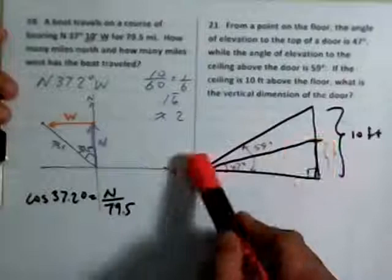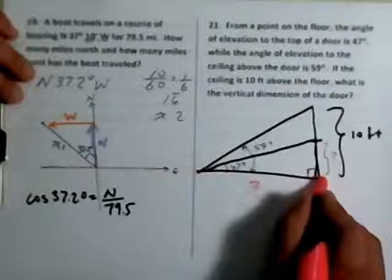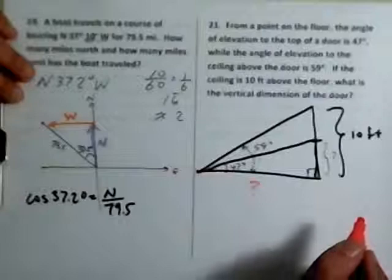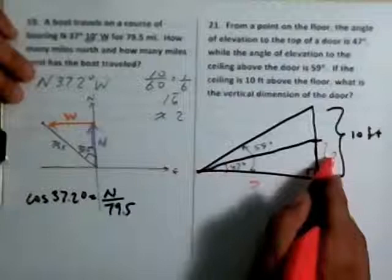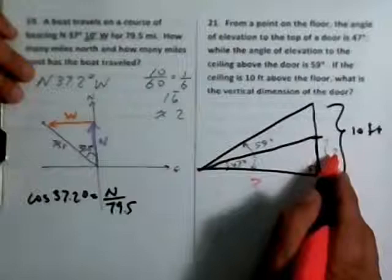And before I stop, I'm going to give you a little bit of a hint. From this triangle you can't find this directly, but from this triangle you can figure out what this is. Once you figure out what this is, this length from where you're located to the bottom of the door, then you can figure out what the height of the door is by using this triangle. The tangent of 47 degrees is equal to the ratio of the opposite side to this side. And you can figure that out from the top triangle. I'll let you stop here, and then we'll start on number 23 later on. Thanks, bye.